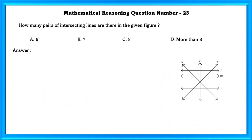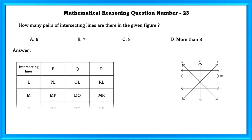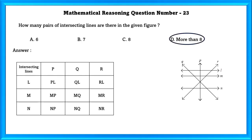Question number 23: How many pairs of intersecting lines are there in the given figure? We can form a tabular column to find this. If we calculate, we can see that there are more than 8 intersecting lines.